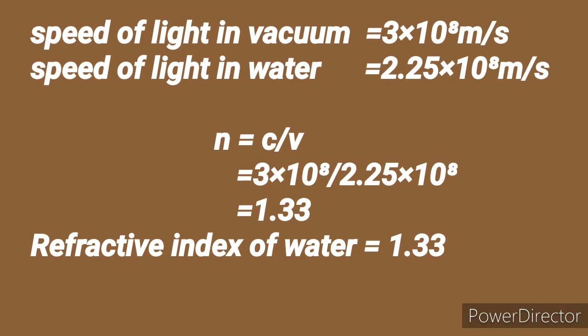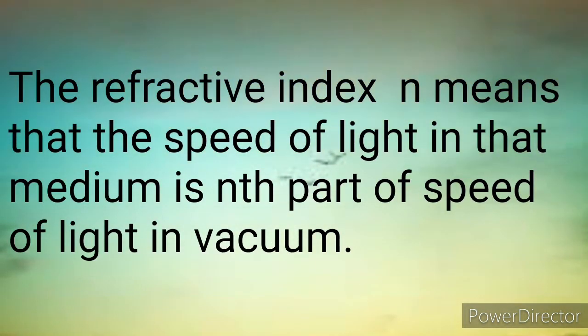Now find the refractive index of water. The speed of light in vacuum is 3 × 10⁸ m/s and the speed of light in water is 2.25 × 10⁸ m/s. Substituting these values into the formula for refractive index, we get the refractive index of water as 1.33.